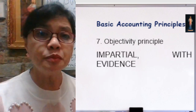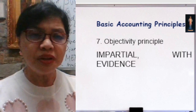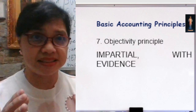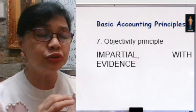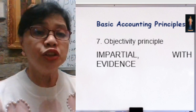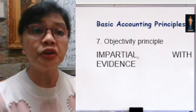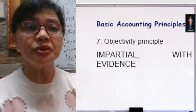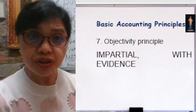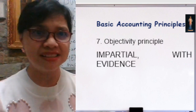Number seven: the Objectivity Principle. An accountant must be impartial — meaning free of bias and independent. When you do your financial statements, you must practice independence and impartiality. How do you do this? When you record something, you must always have supporting documents or evidence, so that you are impartial in recording and presenting financial statements to owners, third parties, and both internal and external users.